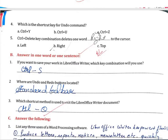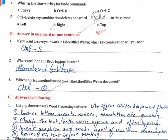Answer in one word or one sentence. If you want to save your work in LibreOffice Writer, which combination key will be used? — Ctrl+S. Where are the Undo and Redo buttons located? — Standard toolbar. Which shortcut method is used to exit the LibreOffice Writer document? — Ctrl+Q.